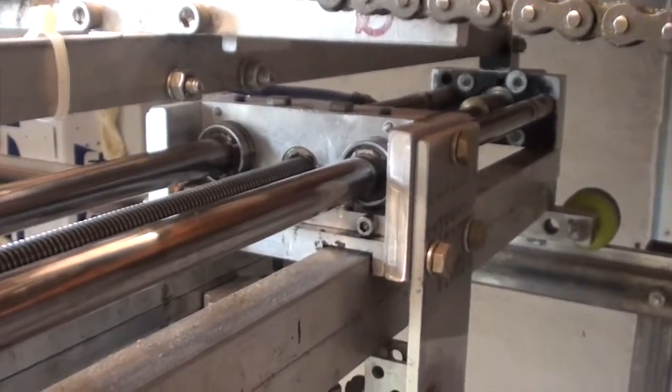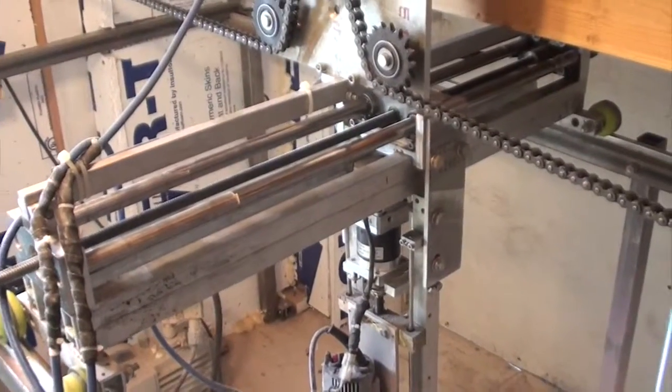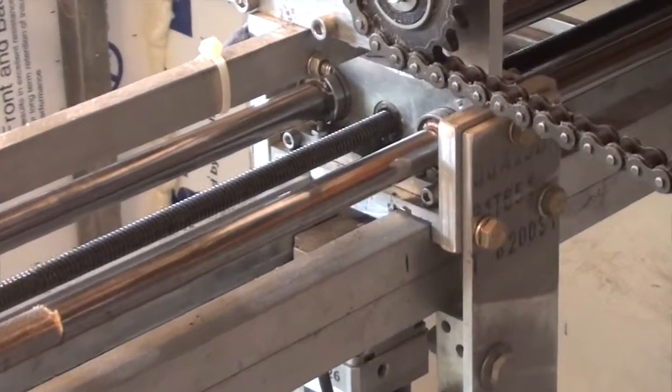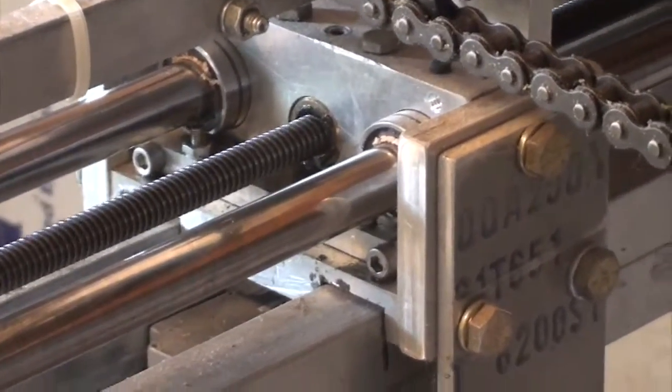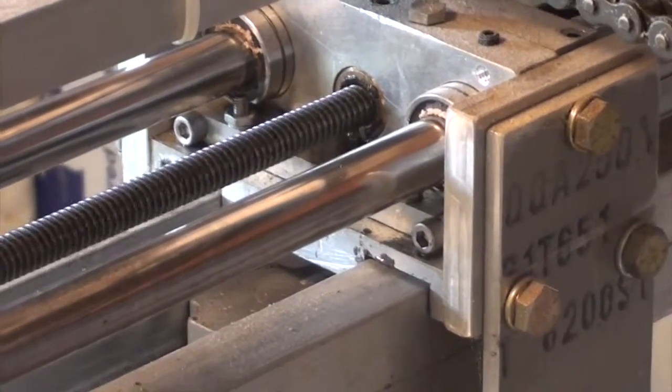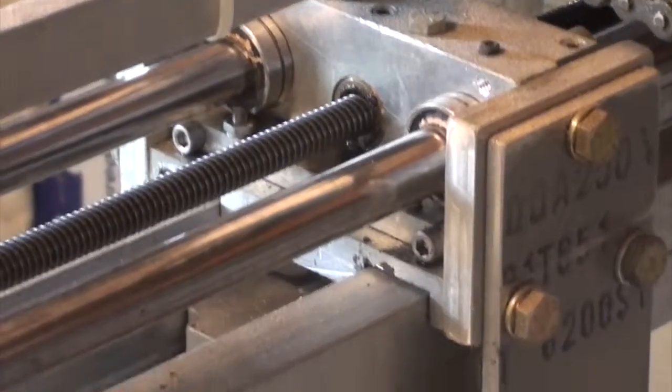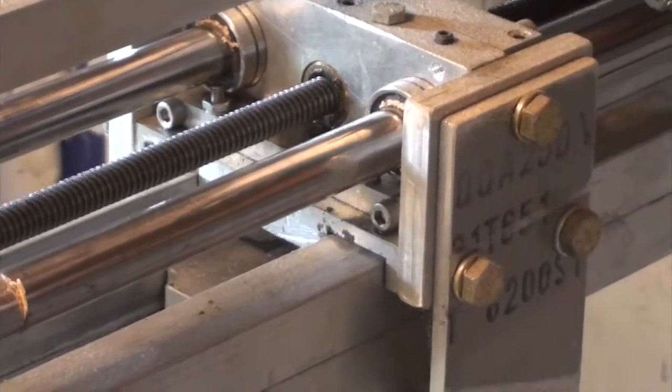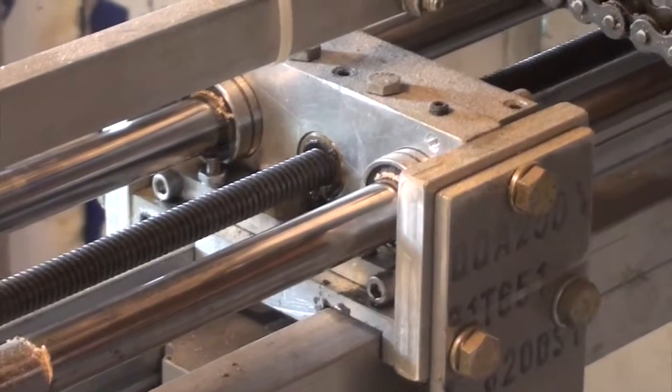Now, let me show you the Y axis in motion. You can see the Y axis block, the aluminum block traveling to the left here, towards me. This can move, of course, independently of the X axis.